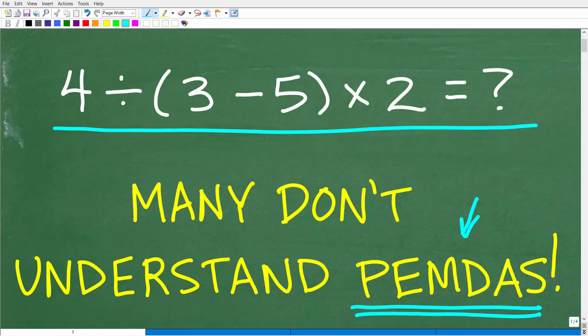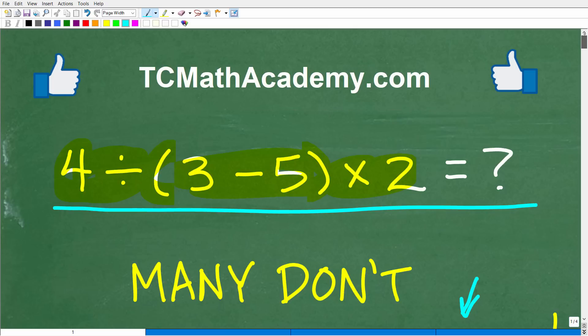Again, the only rule here is no calculator, and the problem is 4 divided by parentheses, 3 minus 5 parentheses times 2. What is the correct answer? Well, go ahead and put that into the comment section. I'm going to show you the right answer in just one second. And then I'm going to walk through the solution to this problem step by step so you understand the correct order of operations. This is probably one of the most common places where students make errors in mathematics. So you definitely want to pay attention to what I have to say in this video.